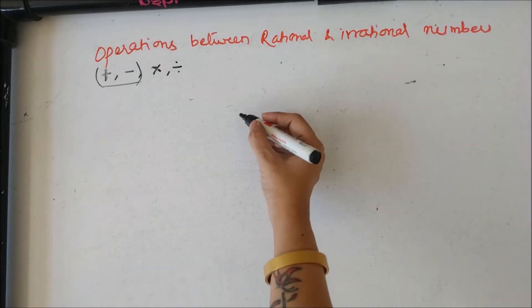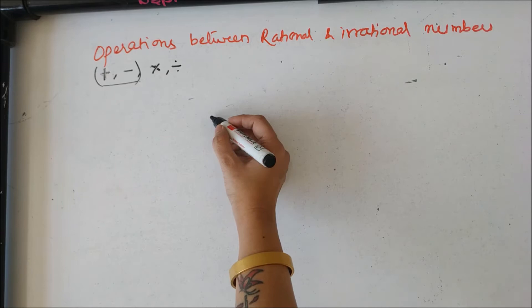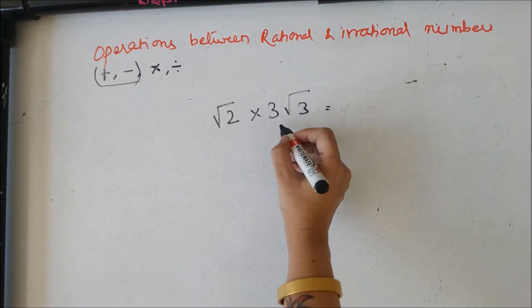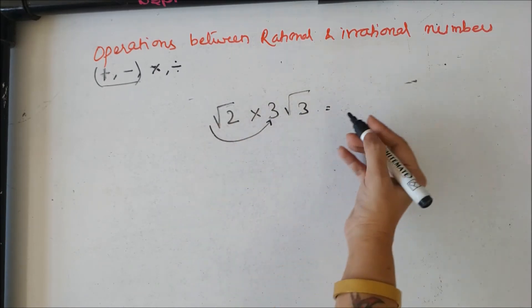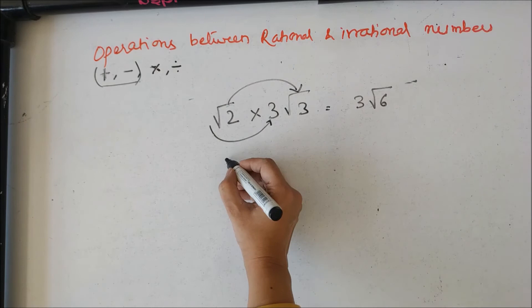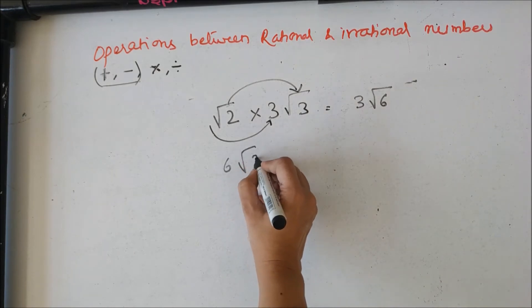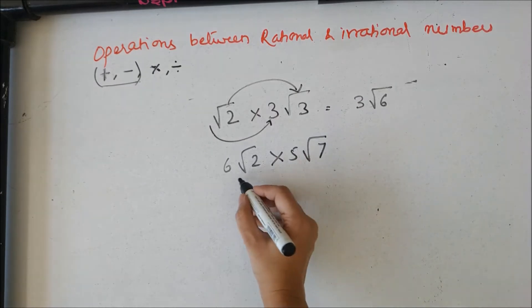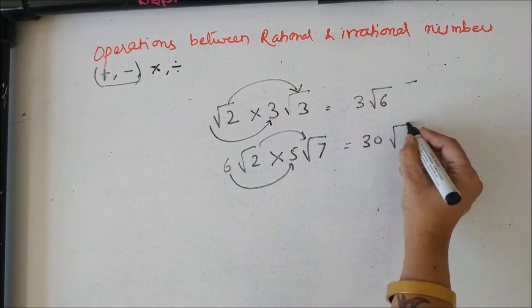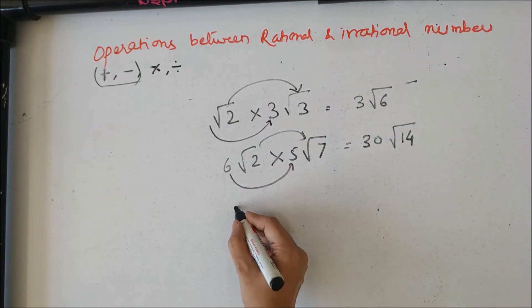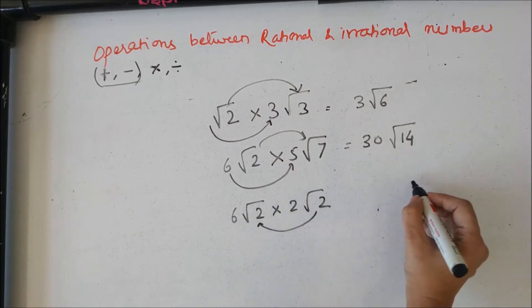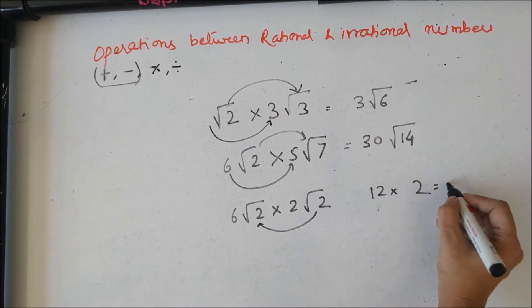When we multiply irrational numbers, the terms do not need to be like. For example, root 2 into 3 root 3 gives 3 root 6. Another example: 6 root 2 into 5 root 7 — multiply the coefficients to get 30, and multiply the roots to get root 14, so the answer is 30 root 14. Also, if we multiply the same type, root 2 into root 2 becomes 2, and 6 into 2 gives 12 — wait, 6 times 2 is 12, with coefficient giving 24.